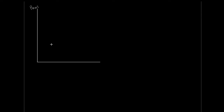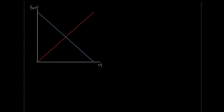Let's draw out our aggregate demand, aggregate supply model. We have our vertical and horizontal axes. On the vertical axis, this is our price level — you can think of this as CPI, the consumer price index, or the GDP deflator. On the horizontal axis, we have real GDP. We have downward sloping aggregate demand, and then upward sloping aggregate supply.